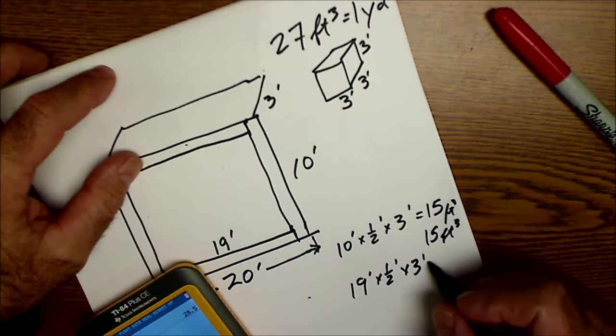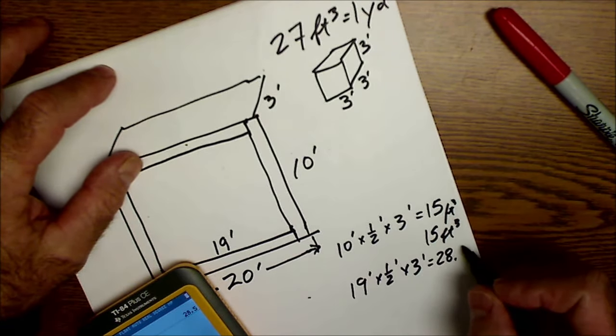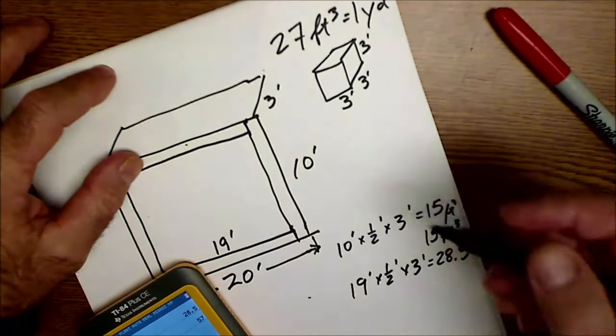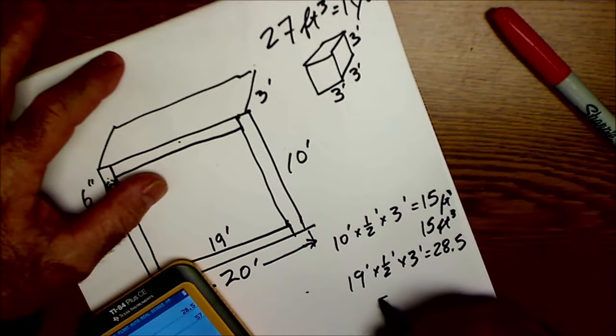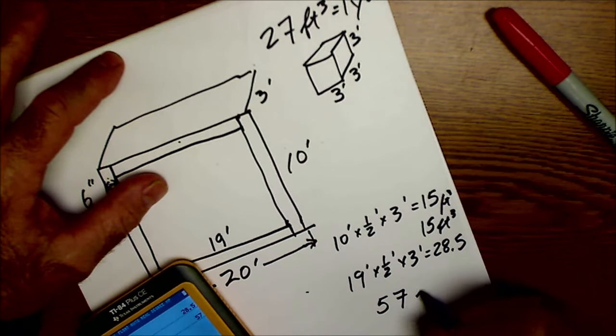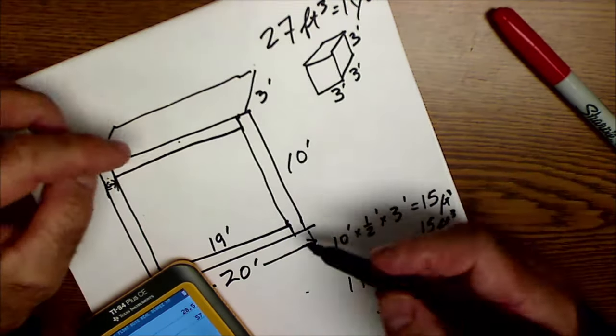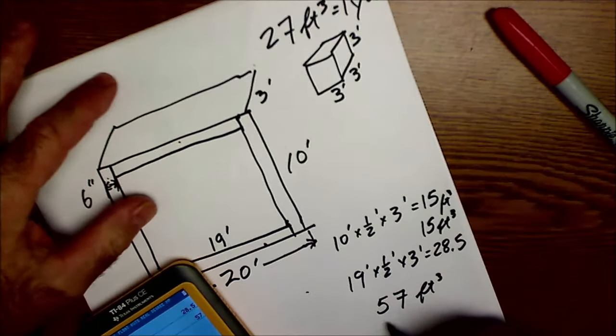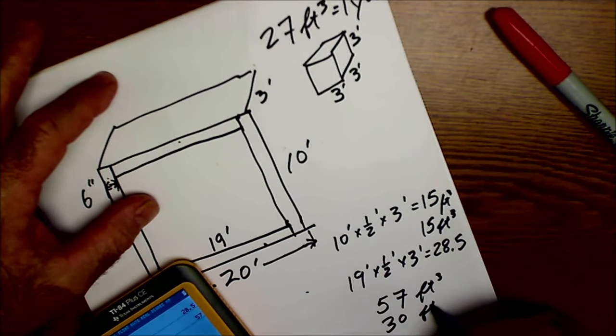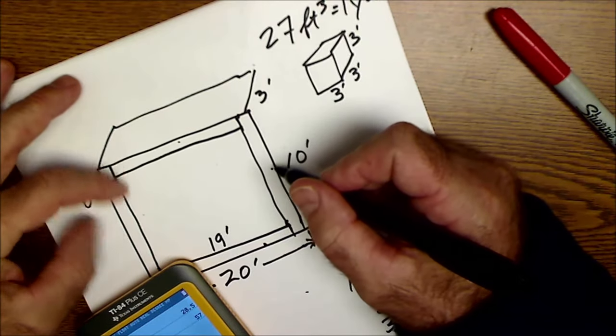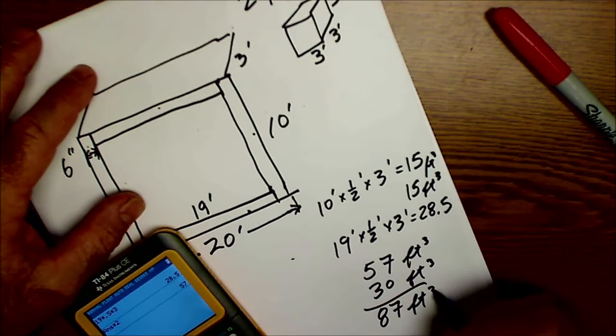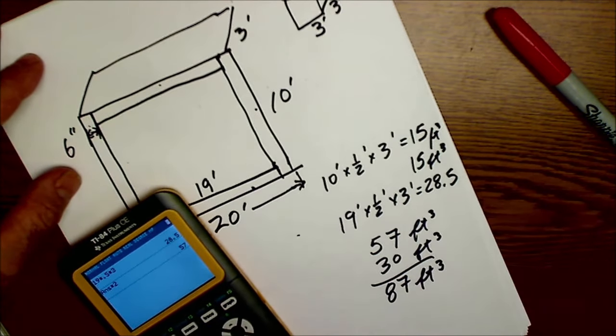So what I have here is 19 times a half times three, and this is 28.5 cubic feet, and then times two for the other one over here, so that's 57. So I have 57 cubic feet for these two rectangles here and then 30 cubic feet for those two rectangles here.